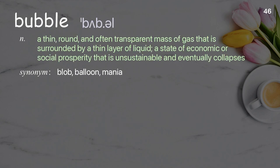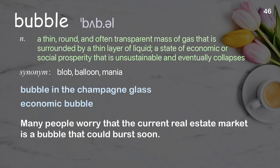Bubble. A thin, round, and often transparent mass of gas that is surrounded by a thin layer of liquid; a state of economic or social prosperity that is unsustainable and eventually collapses. Examples: bubble in the champagne glass, economic bubble. Many people worry that the current real estate market is a bubble that could burst soon.